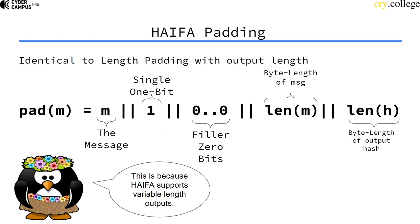HAIFA padding is very similar to length extension padding, only that the length of the output hash is also appended, because the HAIFA construction encourages hash functions to have a variable-length output.